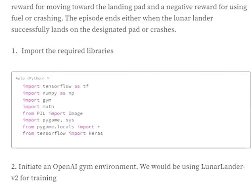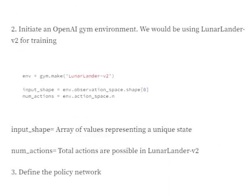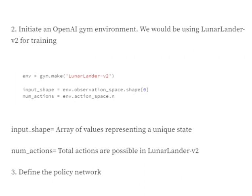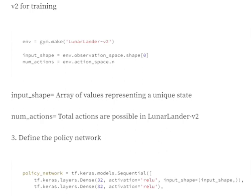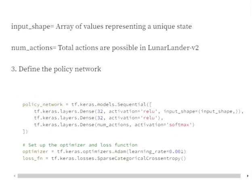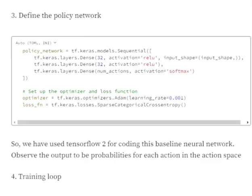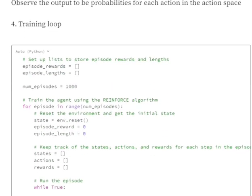First, we import required libraries — gym and pygame. Next, we initiate the OpenAI Gym environment for LunarLander-v2 and save the input shape and number of actions, where the state is a 1D array of eight elements. We then define the policy network — a very shallow neural network with three dense layers, where the last layer has a softmax activation, because the probabilities should add up to one in this multi-class problem.